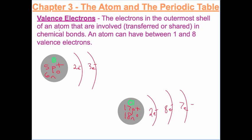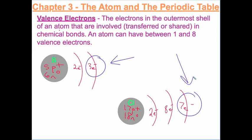For both of these atoms, the valence electrons are the electrons in the outermost shell. Boron's three outer electrons are its valence electrons, and chlorine's seven outer electrons are its valence electrons.